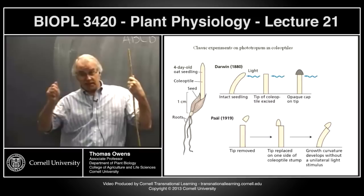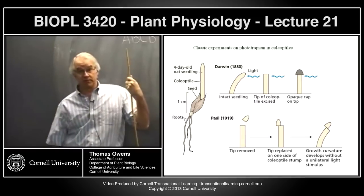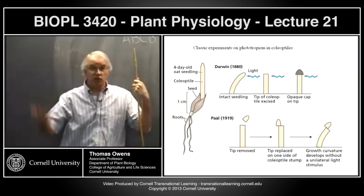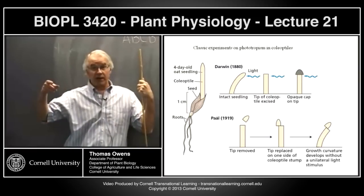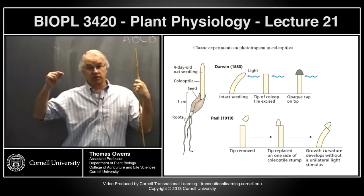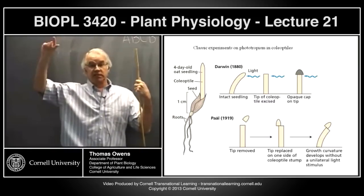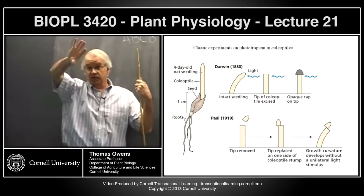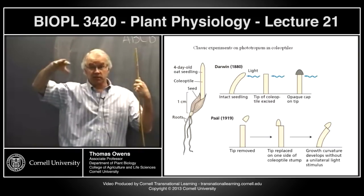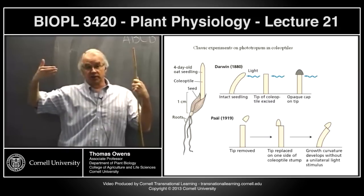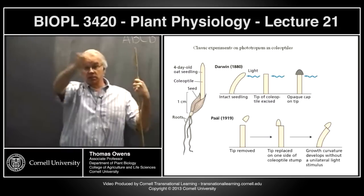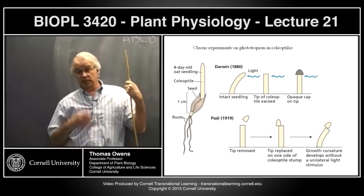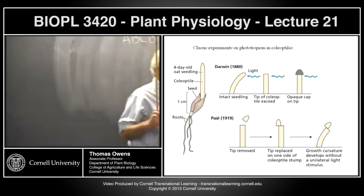If you illuminate only the tip and not the rest, it bends. If you illuminate the rest but not the tip, it doesn't bend. So the light receptors are in the tip, but the responding parts are further down—that's the role auxin plays, moving down and carrying the signal. The blue light receives the signal and receives more on the sunny side than the shaded side. The end of the signal transduction pathway: is it causing more auxin synthesis on the shaded side, or doing something with auxin transport between the sunny and shaded side?